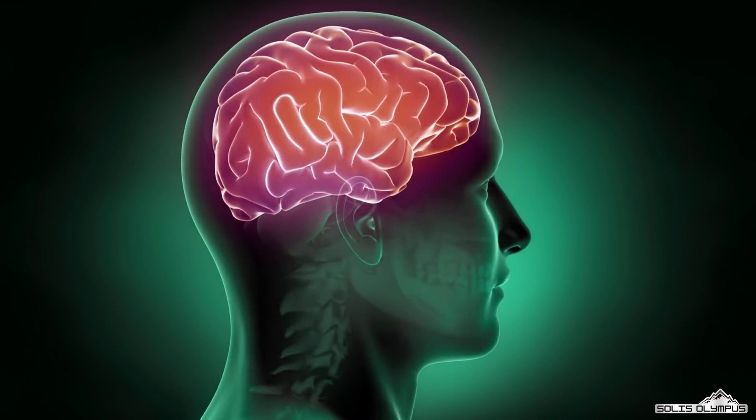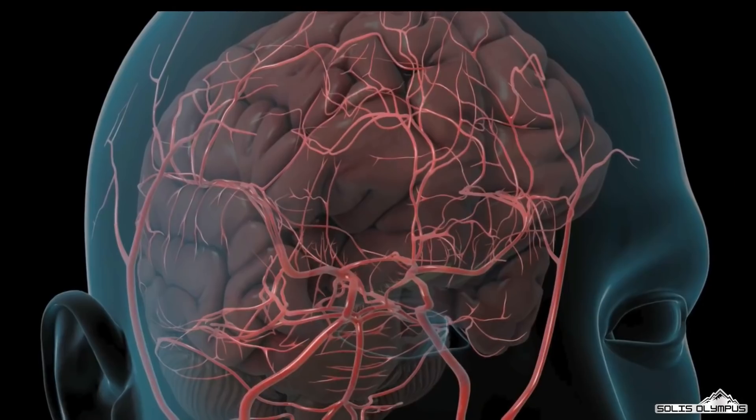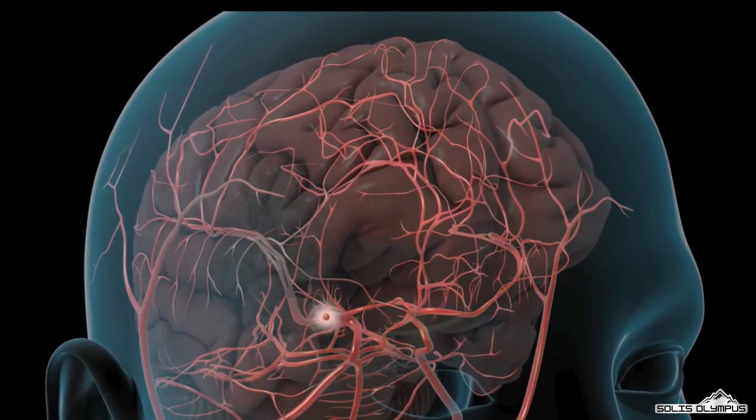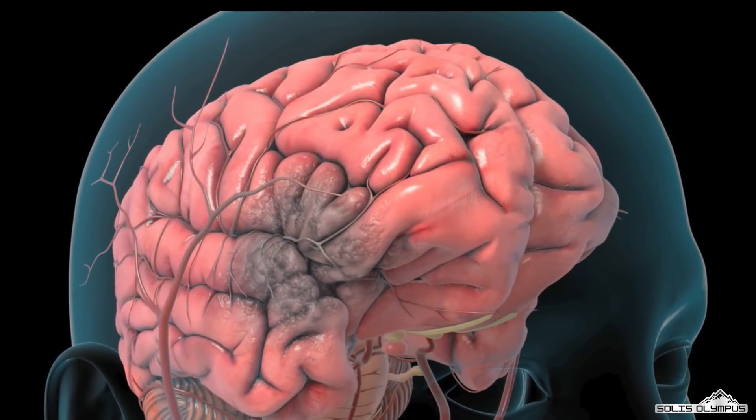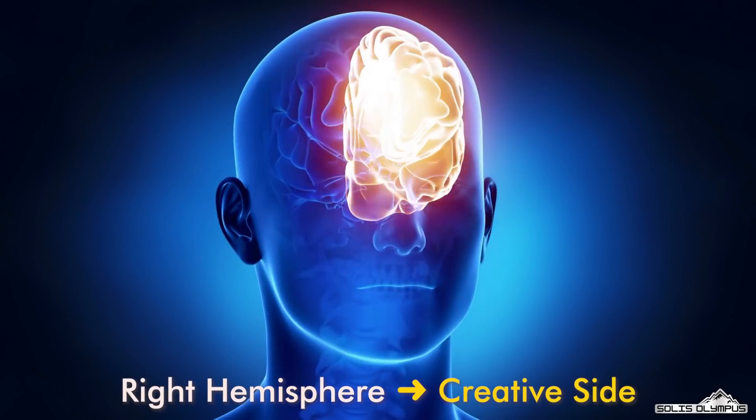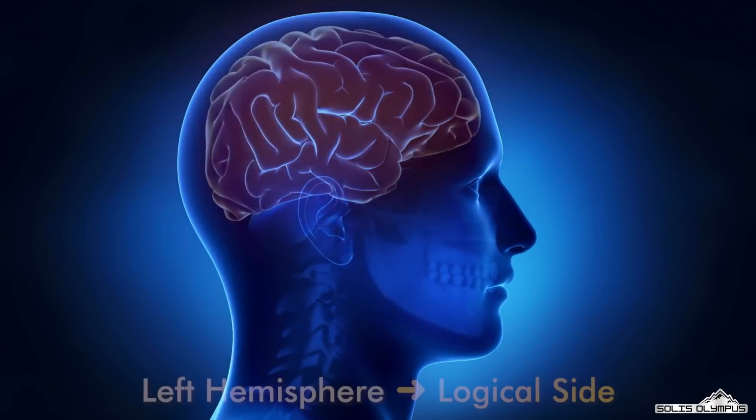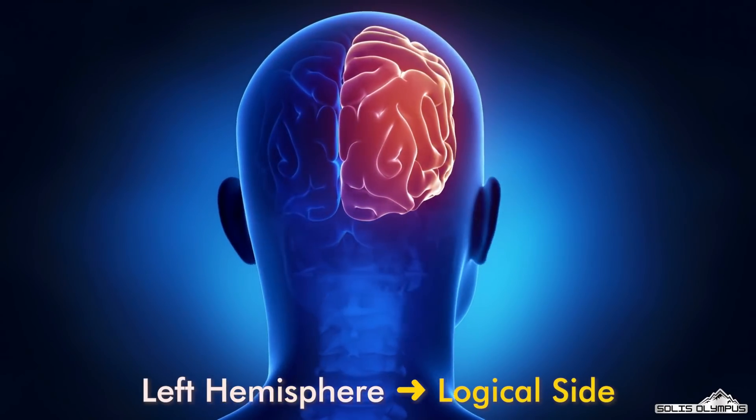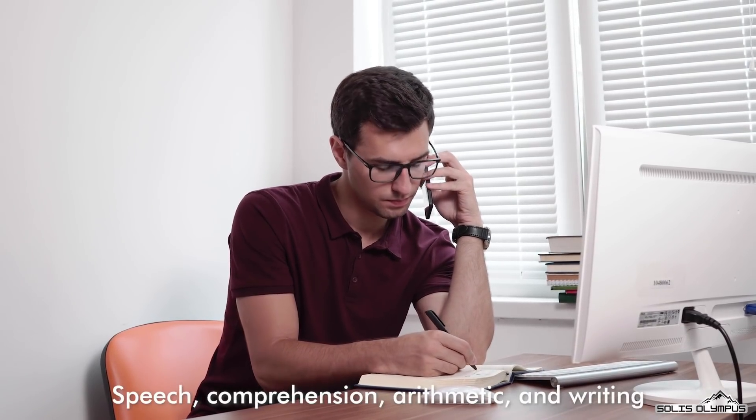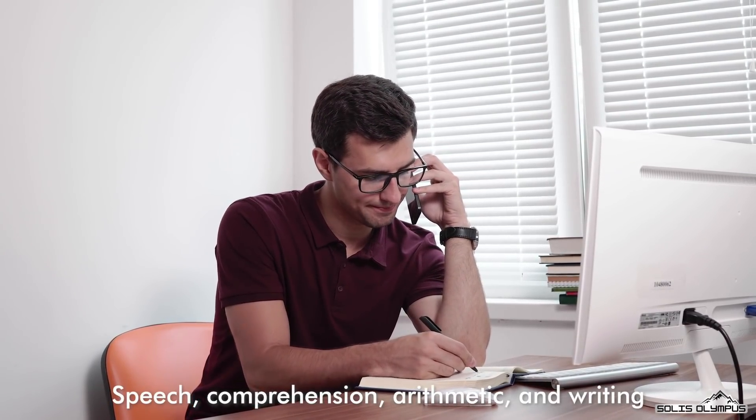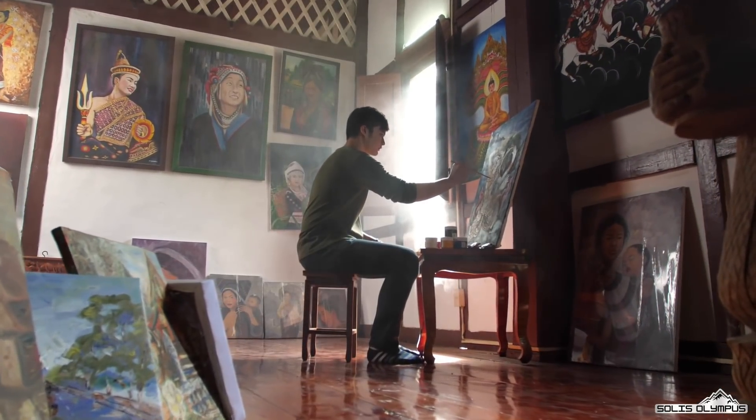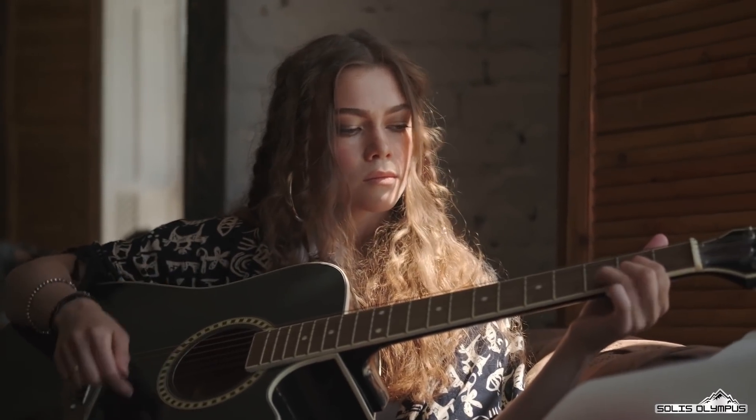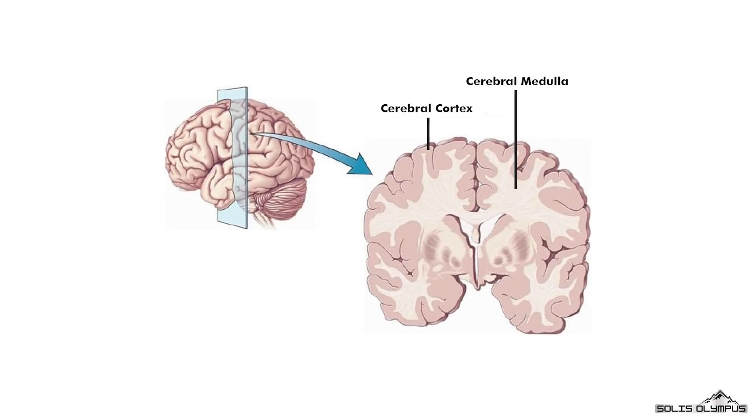Each hemisphere controls the opposite side of the body. If a stroke occurs on the right side of the brain, your left arm or leg may be weak or paralyzed. The right hemisphere is considered our creative side and the left hemisphere is considered our logical side. In general, the left hemisphere controls speech, comprehension, arithmetic, and writing. The right hemisphere controls creativity, spatial ability, artistic and musical skills.